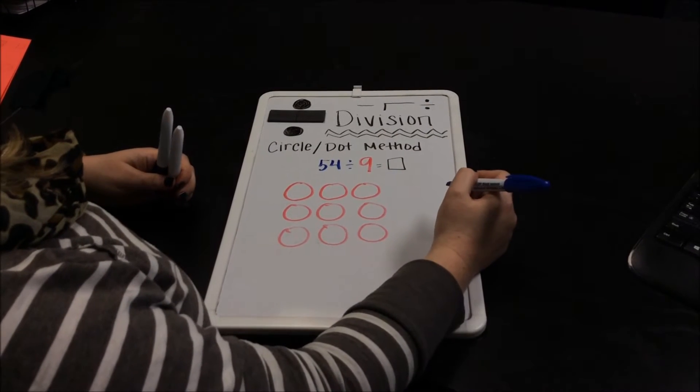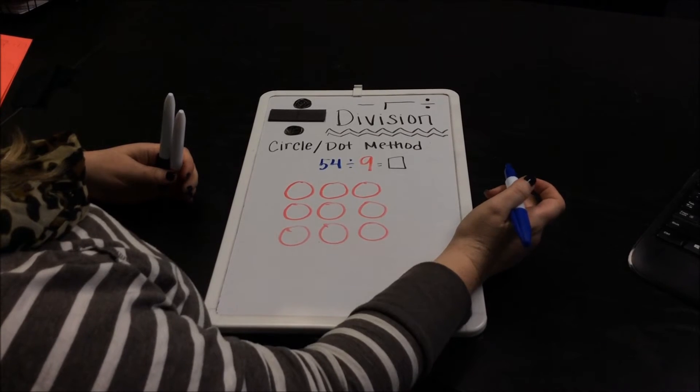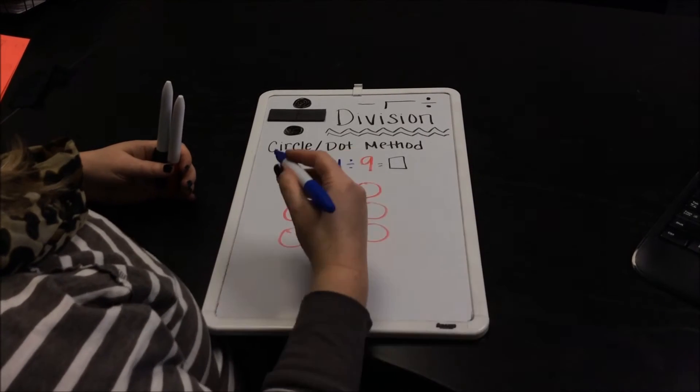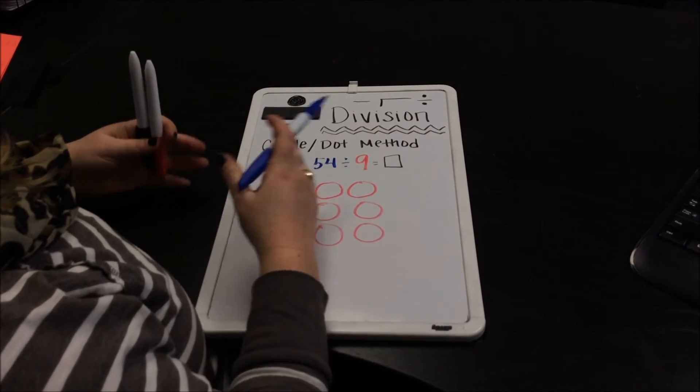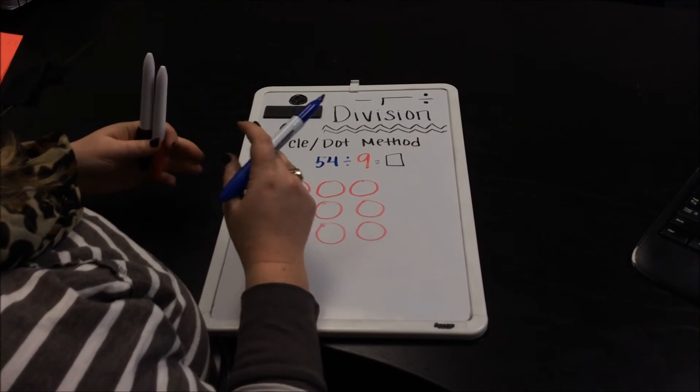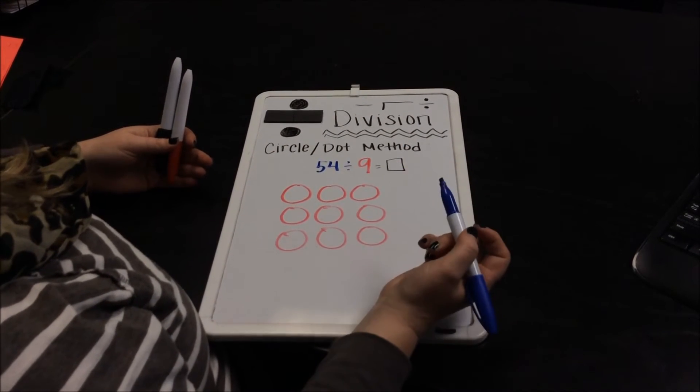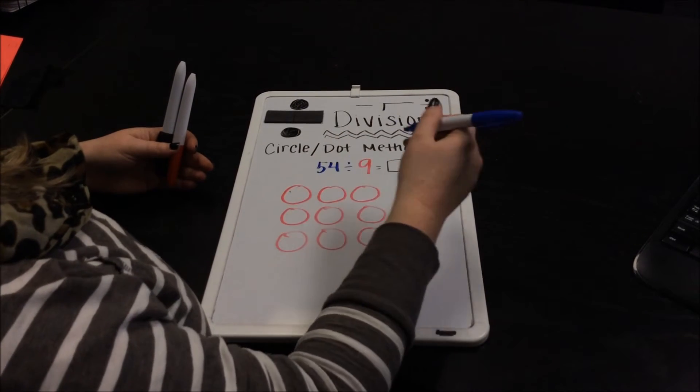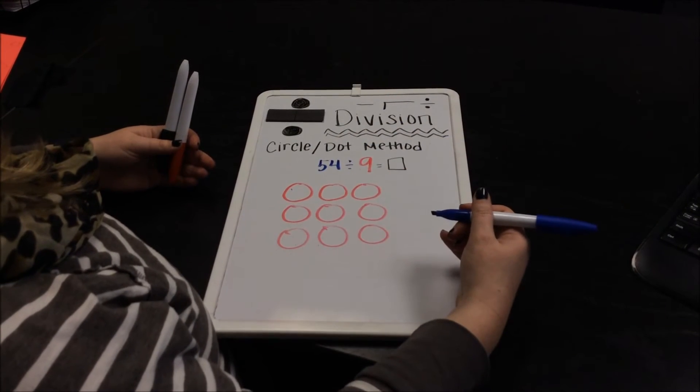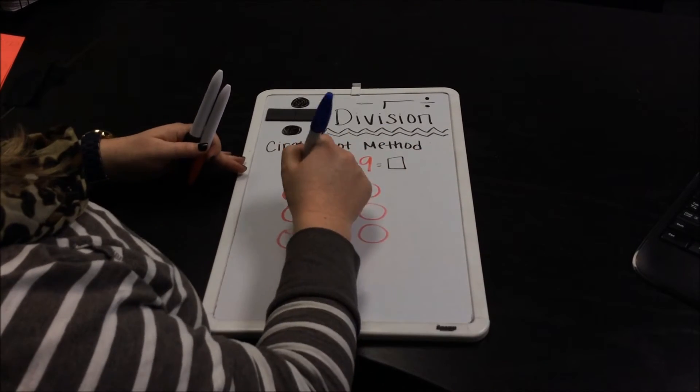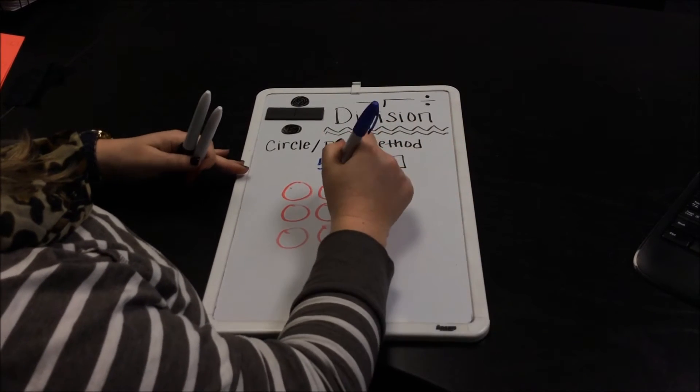Now, the basis of circle dot method in division is that we would equally divide 54 into the 9 different circles and how we need to do that is we put a dot in each one as we're counting up to 54. So we're dividing evenly.